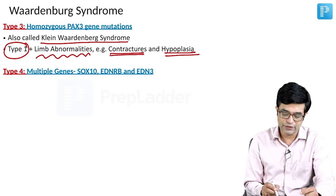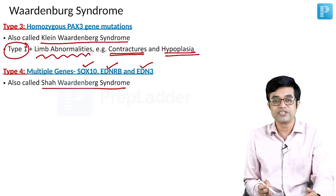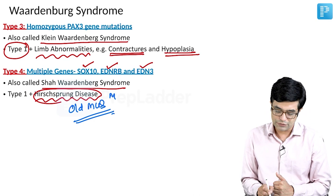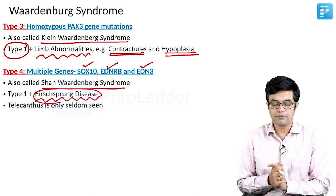Type 4 has three types of genes described: SOX10 gene, EDNRB gene, and EDN3 gene. It is called Shah-Waardenburg syndrome. It comprises Type 1 Waardenburg syndrome features along with Hirschsprung disease — this is a classic MCQ point. Hirschsprung disease is present in the Type 4 variety. Also remember that telecanthus is only seldom seen in Type 4.